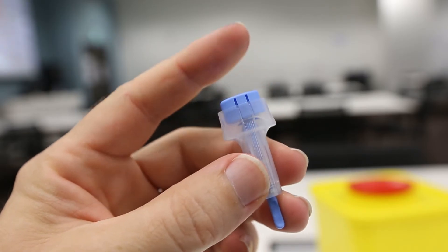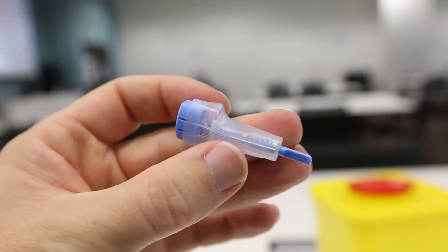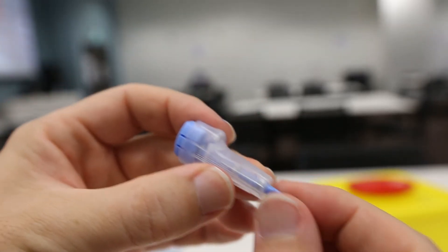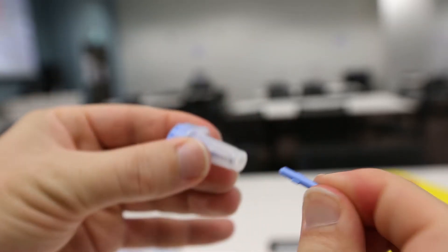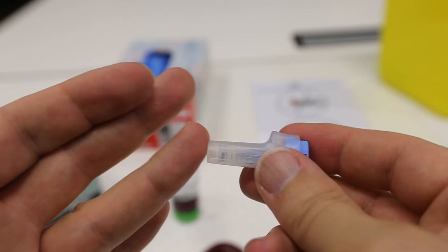Each lancet has a button on the top for discharging the needle. On the base there is a plug, which you simply twist and pull to remove the plug, ready to use the lancet.